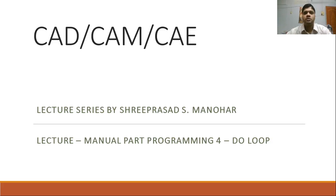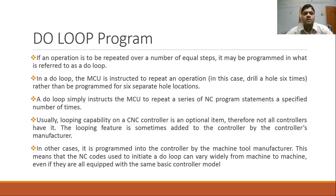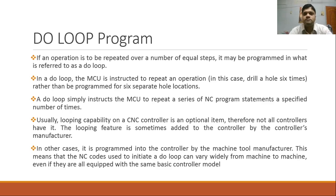Hello friends, welcome to the CAD CAM CAE lecture series. Today we are going to see manual part programming using canned cycles and do loop. Let's get started. We'll first try to understand what we mean by do loop. If an operation is to be repeated over a number of equal steps, it may be programmed in what is referred to as a do loop.